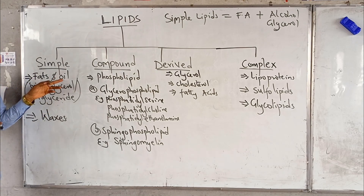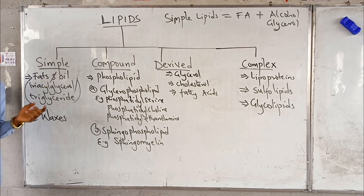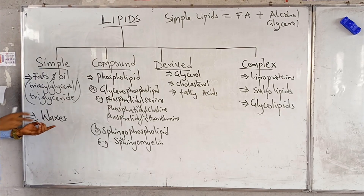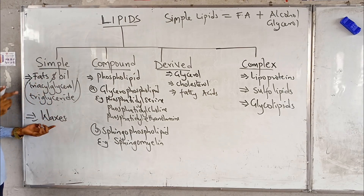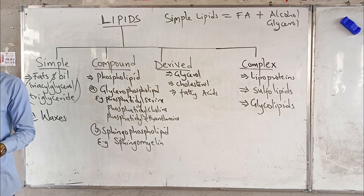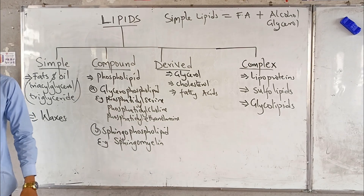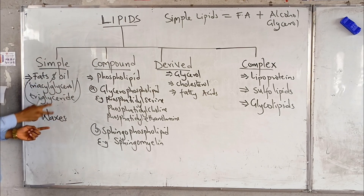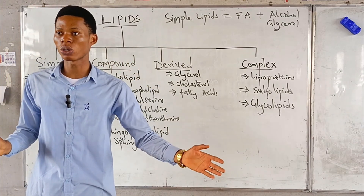The difference between fats and oil is that at room temperature, fat is solid while oil is liquid. So the difference between fats and oil is just in their physical state at room temperature. Now, the difference between fats/oil and waxes: both are simple lipids containing fatty acid and alcohol. In wax, the fatty acid is a long-chain fatty acid, and the alcohol present is non-glycerol — other alcohols can be found in waxes, but glycerol cannot.